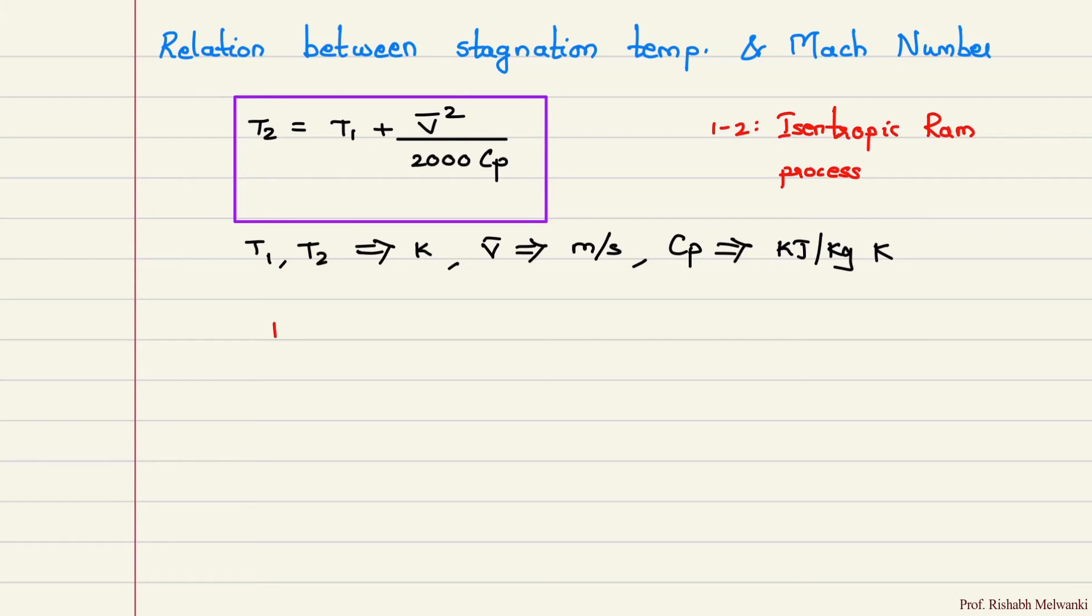Mach number M. It is denoted by M. It is a ratio of actual speed of fluid or object in still fluid to the speed of sound in the same fluid at the same state.